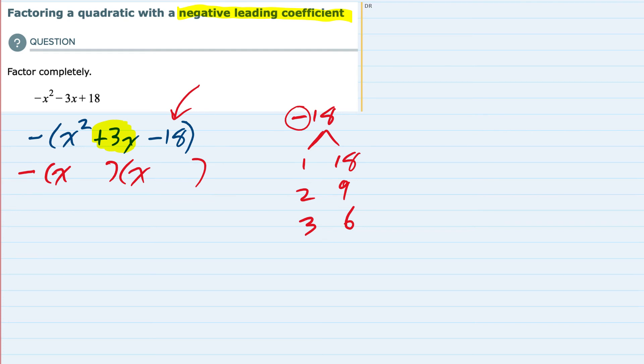That would happen if this were a positive and this a negative. Negative 3 times a positive 6 would give me my negative 18. Negative 3 plus a 6 would give me my positive 3x.